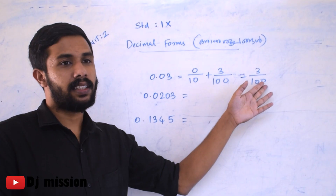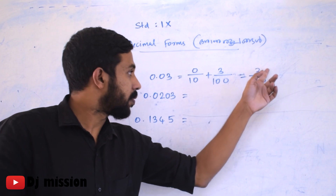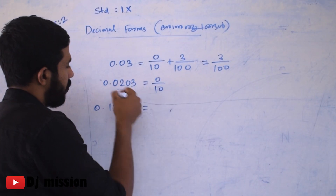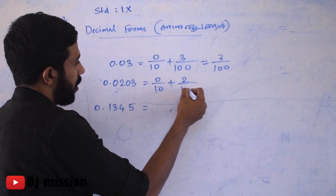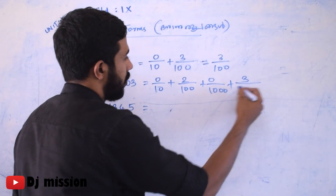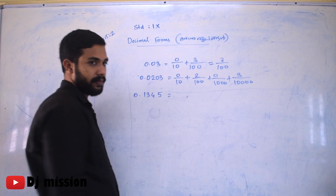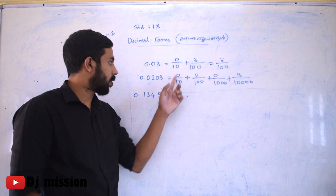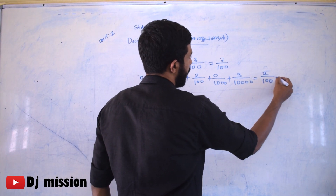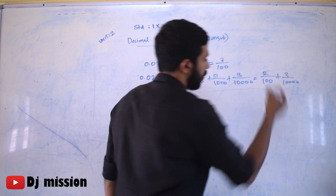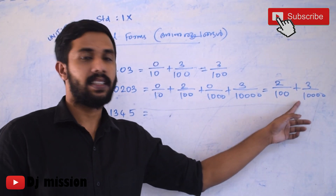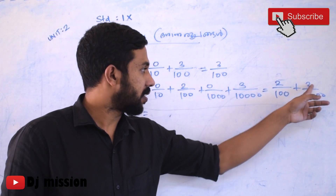Place value: 3 by 100 gives 0.0203. That is 0 by 10 plus 2 by 100 plus 0 by 1000 plus 3 by 10,000. The correct answer is 2 by 100 plus 3 by 10,000. The correct form is 0.0203.